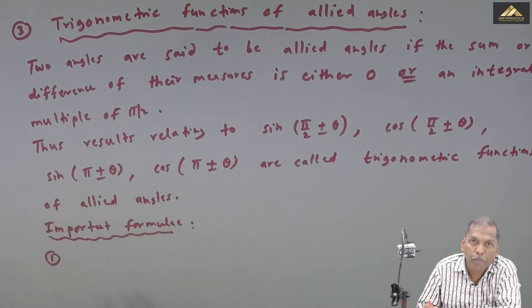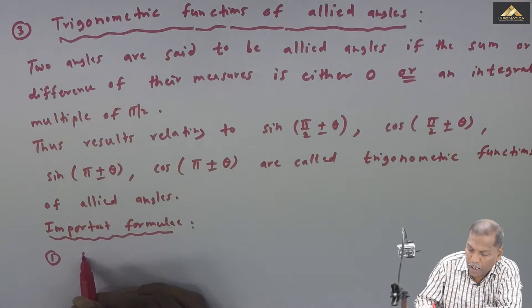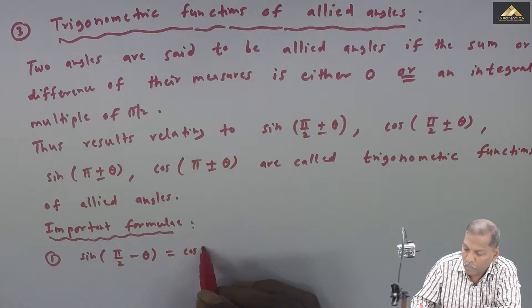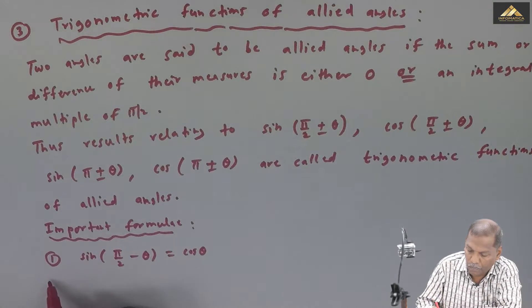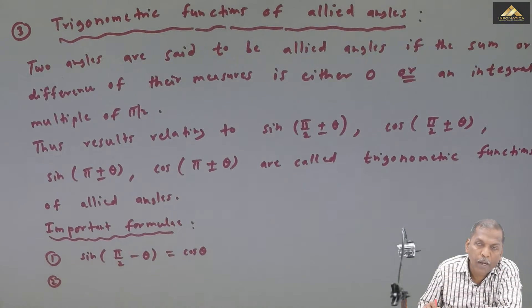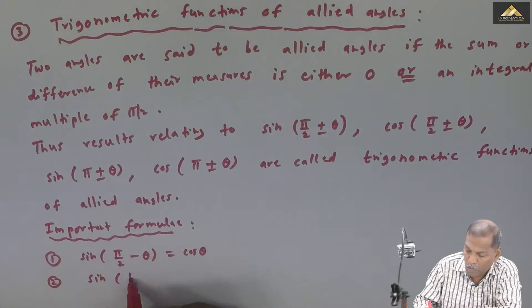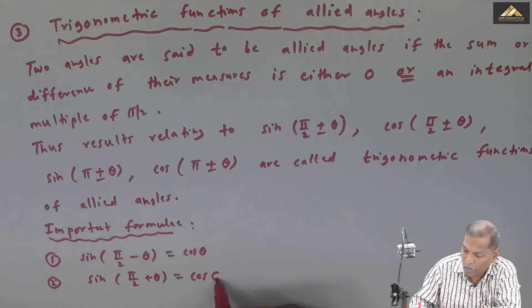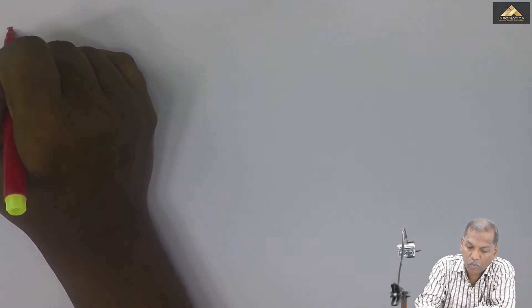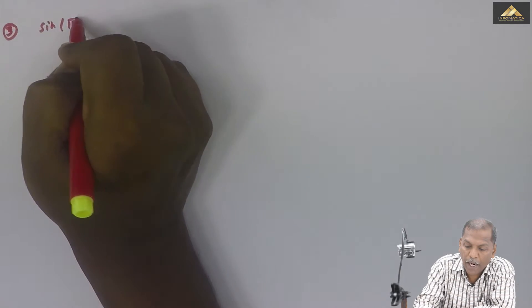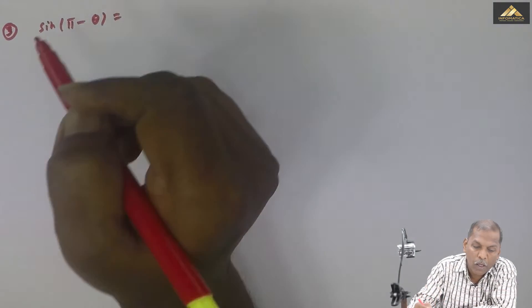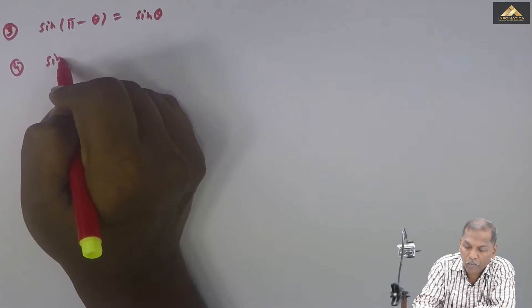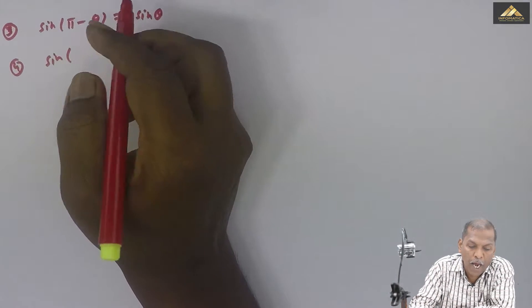Formula number 1: sin of pi by 2 minus theta is equal to cos theta. Formula number 2: sin of pi by 2 plus theta, which is equal to sin theta.